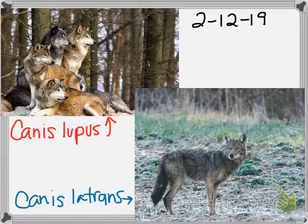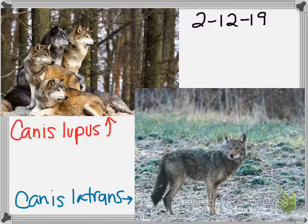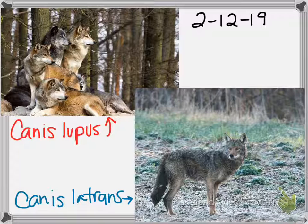Canis lupus — you know what those are, right? Wolves. Those are gray wolves. Canis latrans — who can ID that canid? What is it? It's a coyote. And I should have found a couple pictures, but we'll get to why that is in a little bit.